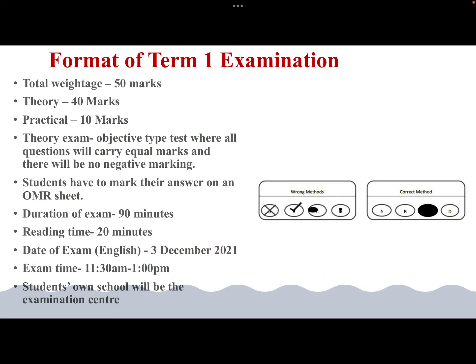Let's have a look at the format of the Term 1 examination. The total weightage is 50 marks — 40 for theory and 10 for the practical component. The theory exam will be objective type, and the questions will carry equal marks. All questions are of equal marks and there will be no negative marking.